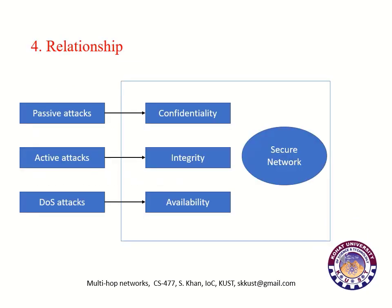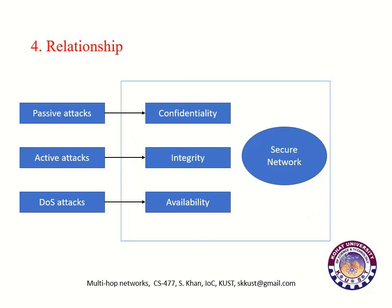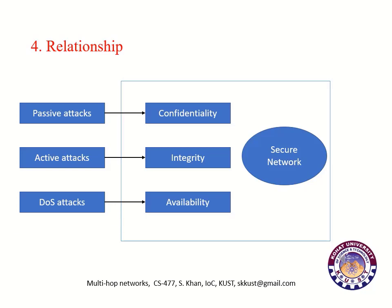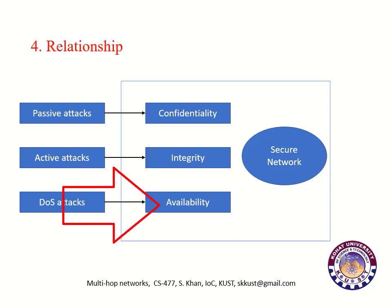Here we will discuss the relationship of secure networks, its characteristics and different security attacks. In this diagram you can see, as already discussed, a secure network ensures three important parameters: confidentiality, integrity and availability. Passive attacks are used to target confidentiality of a network, active attacks are used to target integrity, while denial of service attacks are used to target availability of a network.